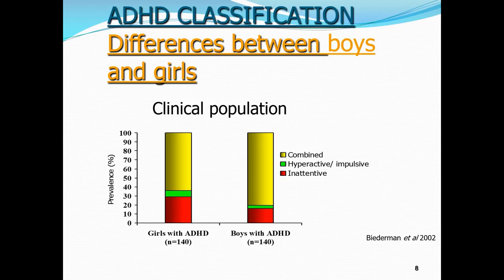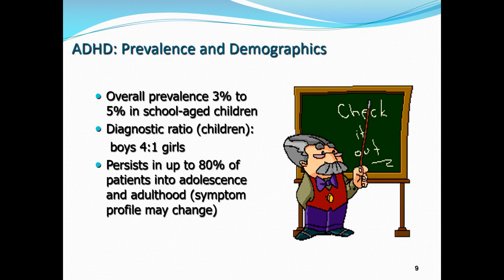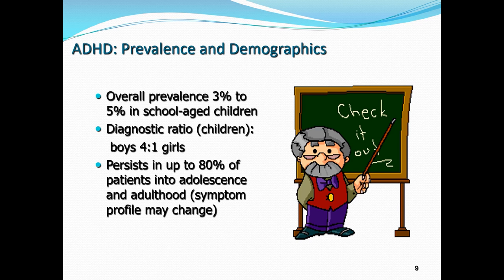ADHD persists into adolescence and adulthood in about 80% of young people. We used to think everybody grew out of it and would take people off their medication, but research has shown ADHD doesn't just disappear. It changes as we grow — an adult will still meet diagnostic criteria for ADHD about 80% of the time, perhaps with residual symptoms rather than the full picture from childhood.